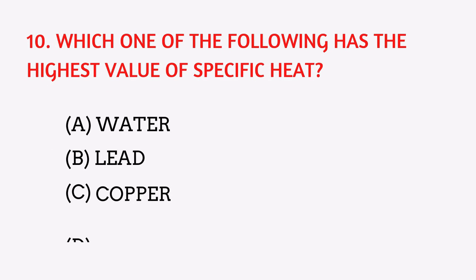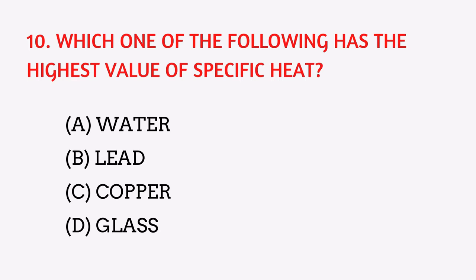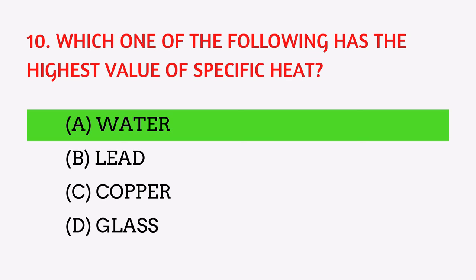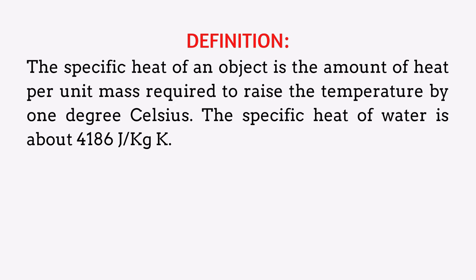Which one of the following has the highest value of specific heat? The answer is water. The specific heat of an object is the amount of heat per unit mass required to raise the temperature by 1 degree Celsius. The specific heat of water is about 4186 joules per kilogram kelvin.